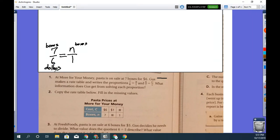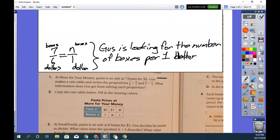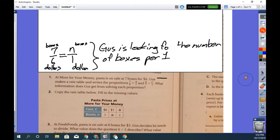Well, what this does for us is tell us that on the right hand side, what he's trying to calculate is the number of boxes per $1. And that answers the question. If we read this top to bottom, Gus is looking for the number of boxes per $1. So that would then be the answer to this proportion.